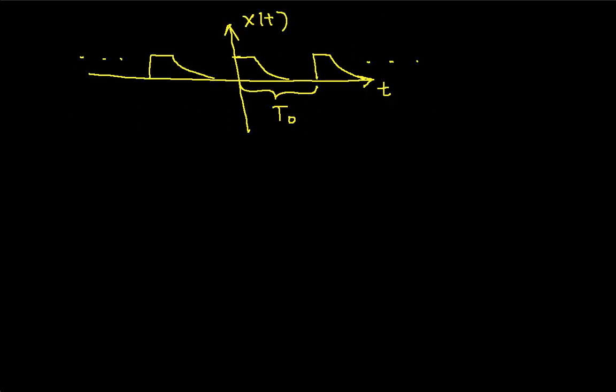Fourier series apply when you have a periodic function. So I've drawn a periodic function x of t here. It has a fundamental period of t sub 0, given by this, and the angular frequency associated with this is omega 0, or radian frequency, 2 pi over t 0. We'll need that in the formulas.